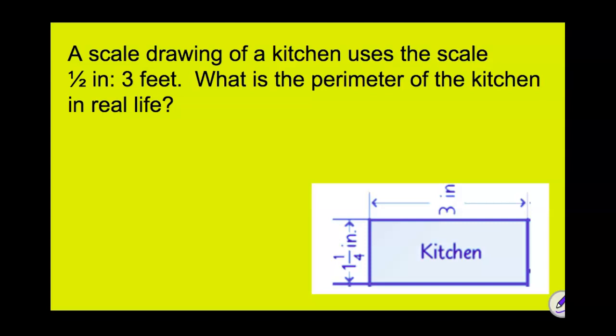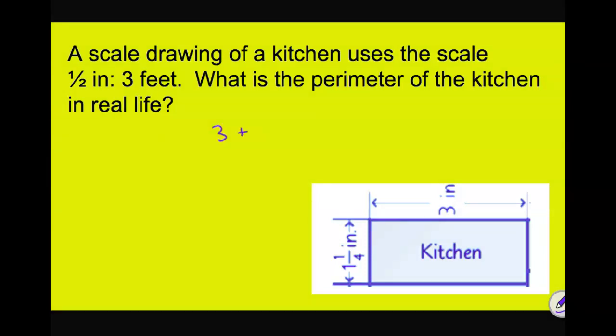So the first thing we probably want to do is find the perimeter of the kitchen just by measurements on the scale. So if we add 3 and 1¼, 3 and another 1¼, we're going to get 8½ inches.